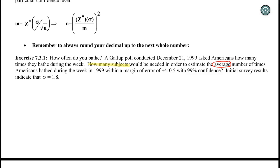The number of times Americans bathe during the week with a margin of error of plus or minus 0.5. So our margin of error is 0.5 and our confidence level is 99%. And then we get the most contradictory sentence ever.